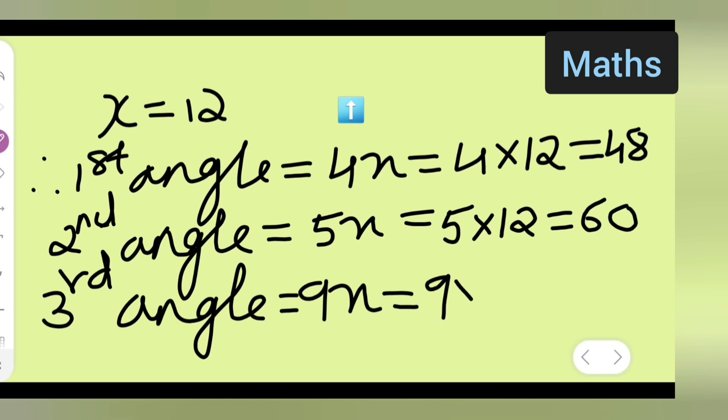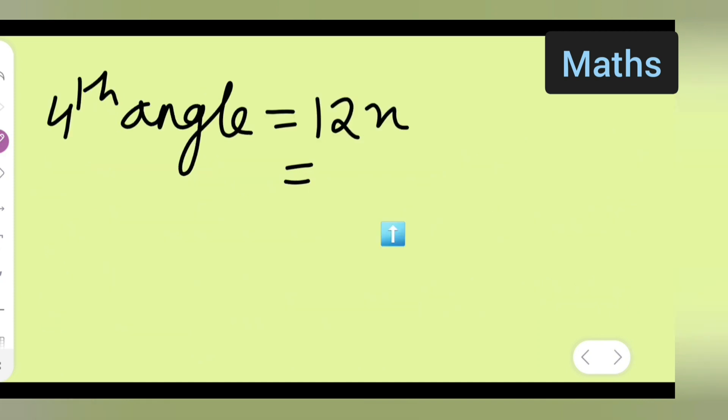Next is 9 multiplied by 12, so 9 times 12 is 108. The fourth angle will be 12 multiplied by 12, so 12 times 12 is 144.